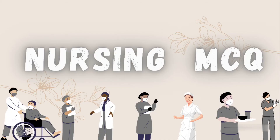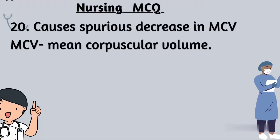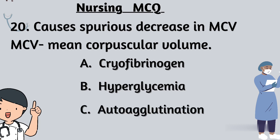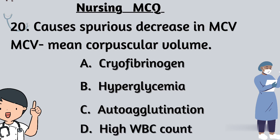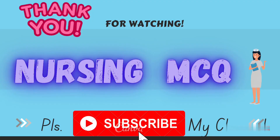Question number 20: What causes a spurious decrease in mean corpuscular volume? Option A: cryofibrinogen, Option B: hyperglycemia, Option C: auto-agglutination, Option D: high WBC count. The right answer is Option A: cryofibrinogen. Please subscribe to our channel Nursing MCQ. Thanks for watching.